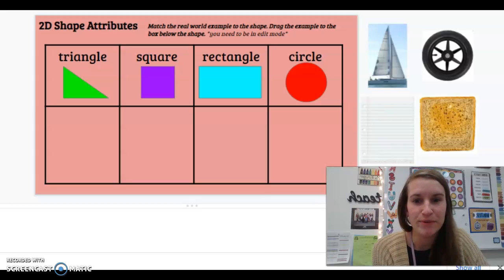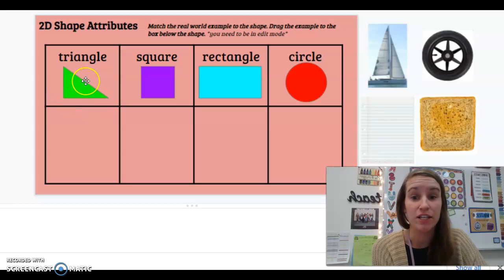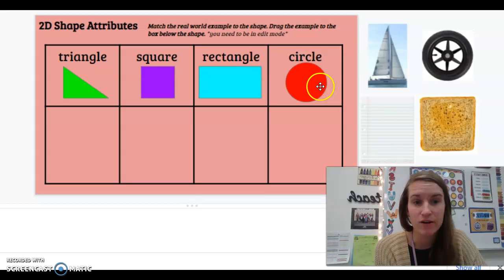Let's check and see how you did. So the first page we needed to find the real world example of a triangle, square, rectangle, circle.